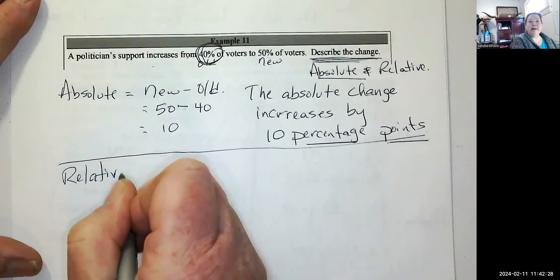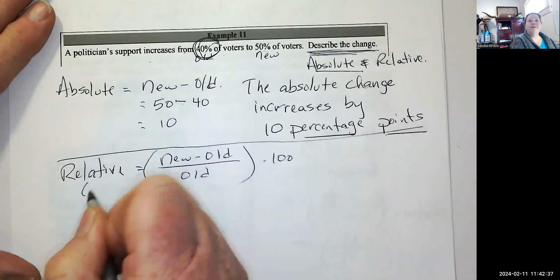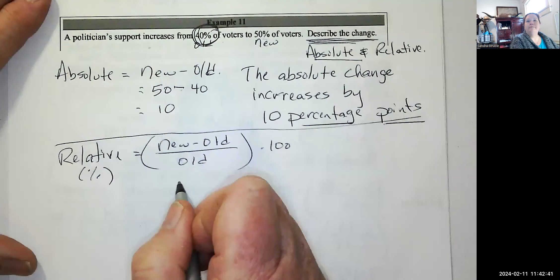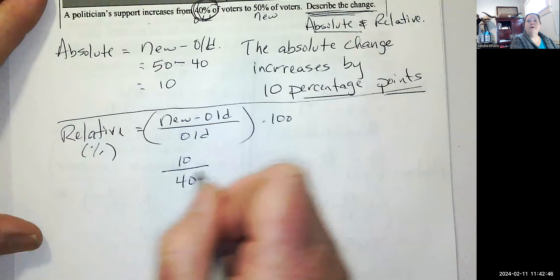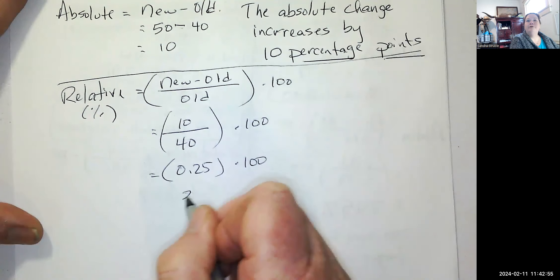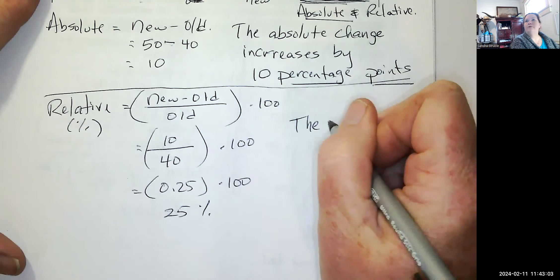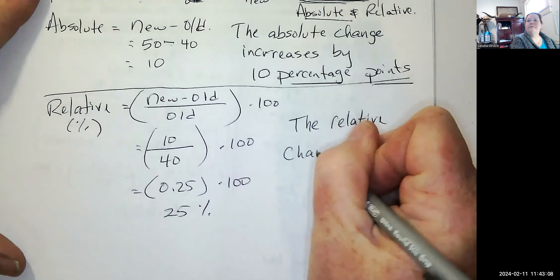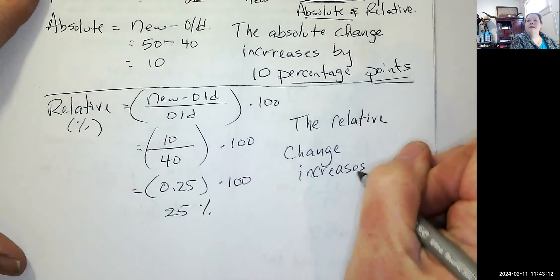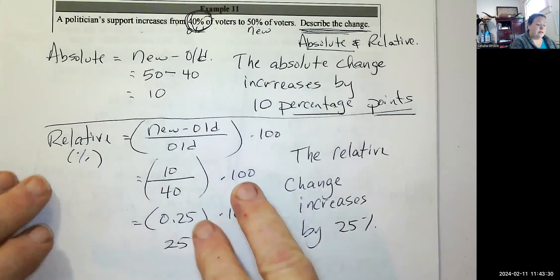For relative change: new minus old divided by old, times 100. That's 10 divided by 40 equals 0.25, times 100 equals 25%. So the relative change is an increase of 25%. The politician's support increased by 10 percentage points — absolute — or by 25% — relative. These are not the same thing. Please make sure you understand the difference.